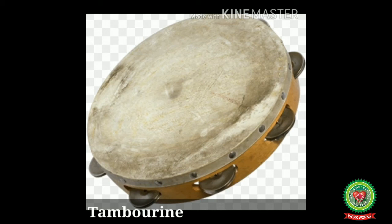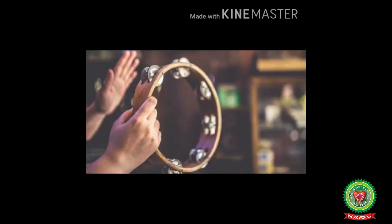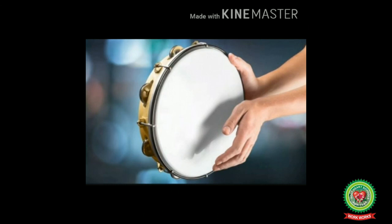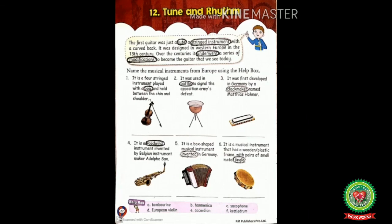And the last one is the tambourine. The tambourine looks like a small handheld drum. It is a musical instrument that has a wooden or plastic frame with pairs of small metal jingles. These jingles look like tiny cymbals fitted in slots against the frame. It can be shook, struck, jingled, or tapped against the body to produce sound.